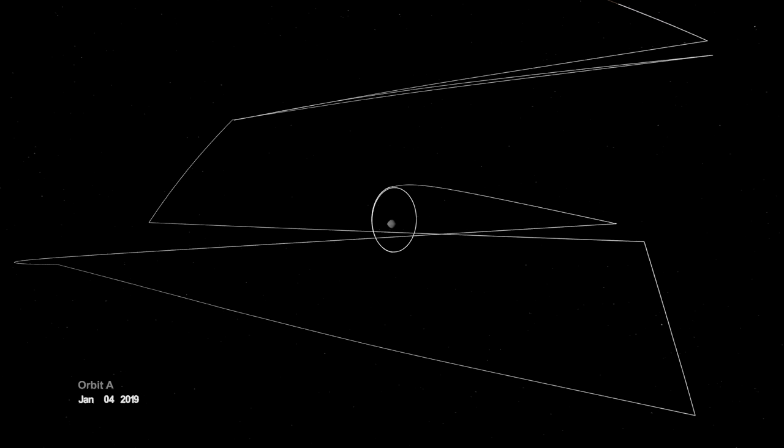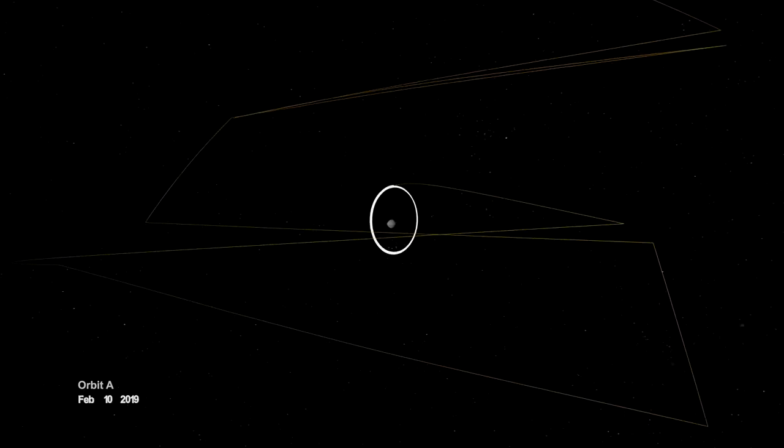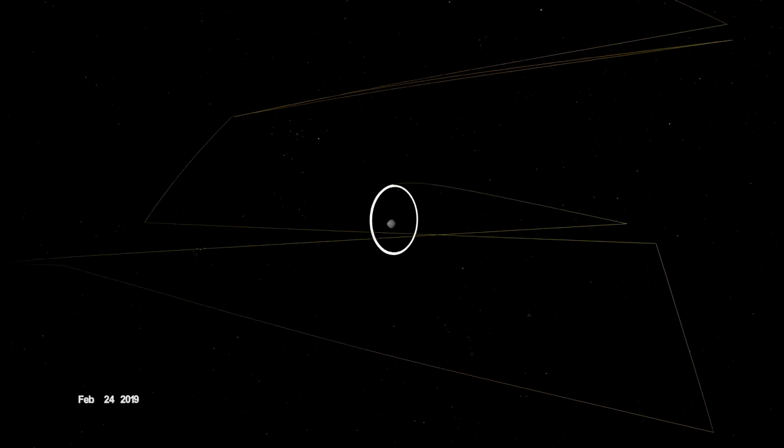On New Year's Eve, OSIRIS-REx was captured into orbit by Bennu's minuscule gravity, making it the smallest world ever to be orbited by a spacecraft.